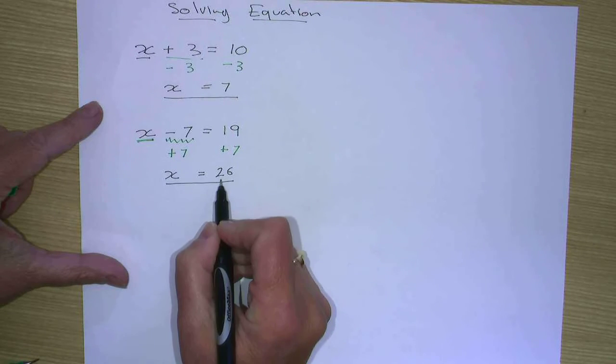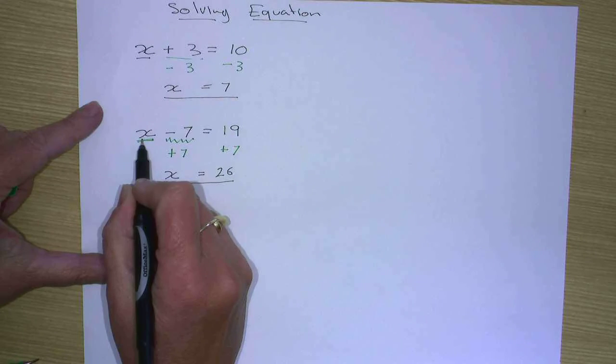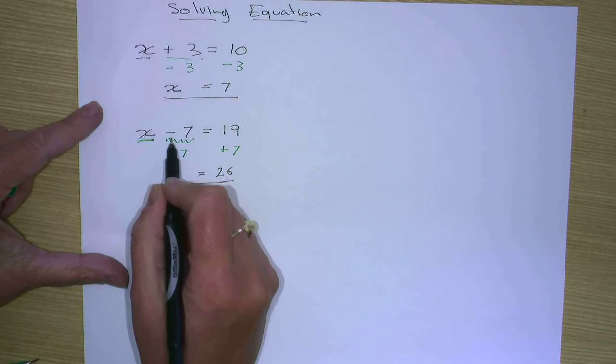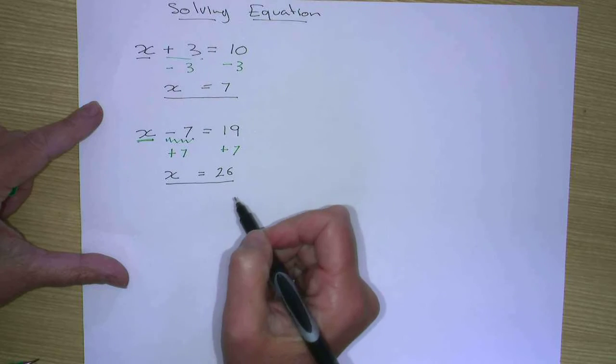Check our equation. Replace the x in the equation with the 26. 26 minus 7 equals 19. Correct.